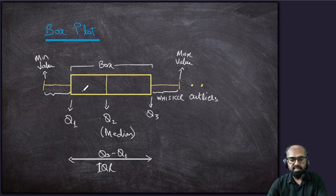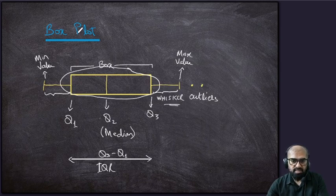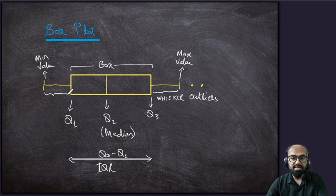Let's have a bird's eye view of this particular box plot. You can see this part is basically the box, and this particular part is the whisker — that's why it's called a box and whiskers plot. Let's talk about what the main terminologies are and how the data is distributed in five parts.